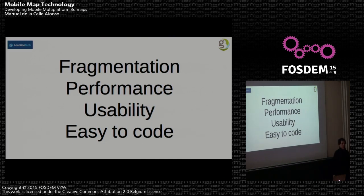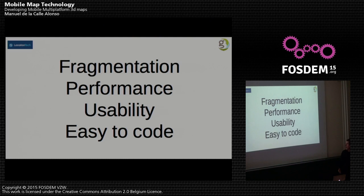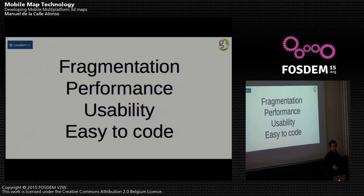We have to face a lot of problems to work in the native way and to work on mobile. The first problem is fragmentation. We have fragmentation in the hardware and fragmentation in the software — thousands of different devices with different screens, different processors, different memory, etc. We also have fragmentation in software: different operating systems, different programming languages. This is a very big problem when you start to develop a map application.